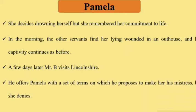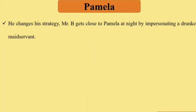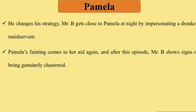A few days later, Mr. B comes to Lincolnshire and offers Pamela a set of terms on which he proposes to make her his mistress, but she denies it. He changes his strategy and tries to get close to Pamela at night by impersonating a drunken maidservant. Pamela's fainting again comes to her aid. After this episode, Mr. B shows signs of being genuinely chastened.